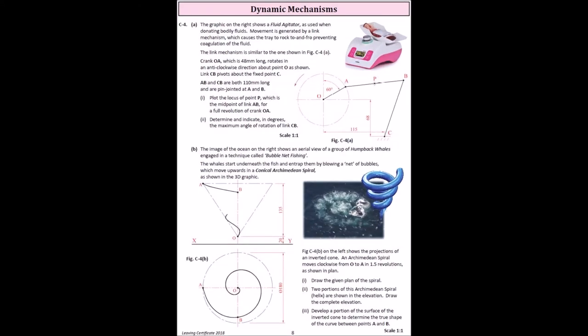C4 then. So in my predictions, I said logarithmic spiral and a kind of combined movement where you had loci plus a linkage. But a linkage came up without the loci. So just straightforward linkage there. The linkages are the best part of the dynamic mechanism as far as I'm concerned. They're so straightforward and nice and handy pickup marks on. So that was C4 part A. It should have been handy enough, straightforward enough.